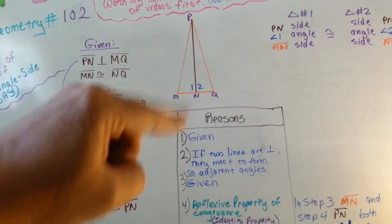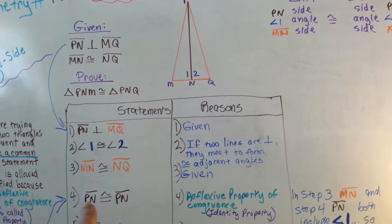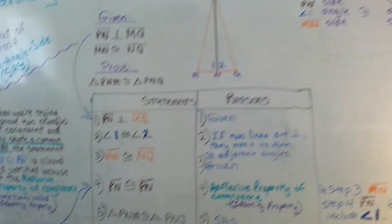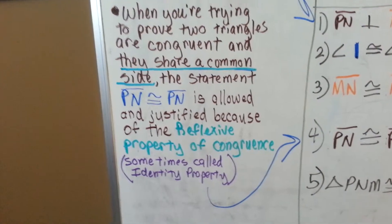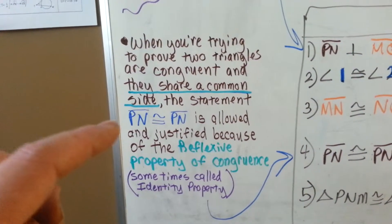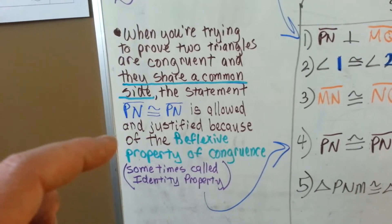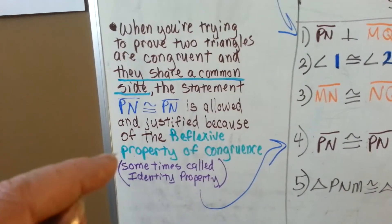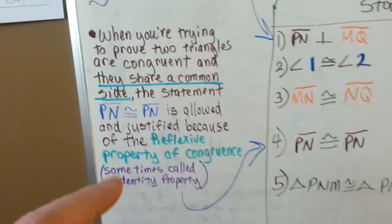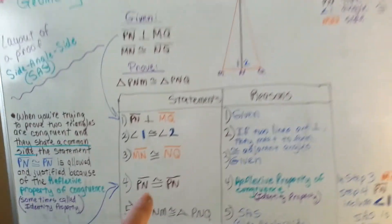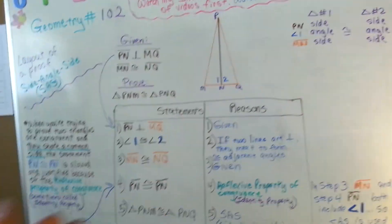PN, this guy, is congruent to PN. How can we say that one line is congruent to another line? Well look at this. When you're trying to prove two triangles are congruent and they share a common side, the statement PN is congruent to PN is allowed and justified because of the reflexive property of congruence. We just covered that before. Sometimes it's called the identity property.